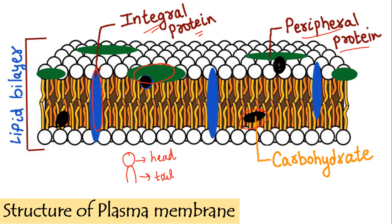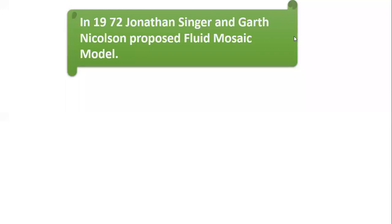If we talk about this structure, we can see that the maximum proportion is covered by lipids and proteins. However, only some portion shows the presence of carbohydrates in this plasma membrane structure.